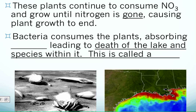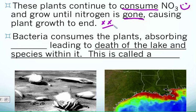These plants continue eating and consuming those nitrates, because nitrates are good for them, until the nitrogen is totally gone. Once they run out of nitrogen, their food source is gone and those plants will die. Now here's where bacteria comes in. We said bacteria was a big part of the nitrogen cycle, but this is a decomposer bacteria — it helps consume things that are dying and decomposing, in this case the algae.